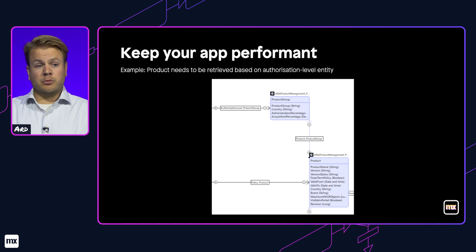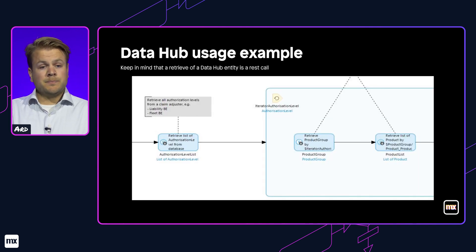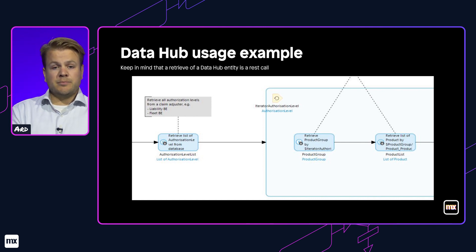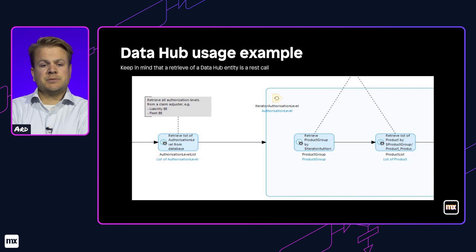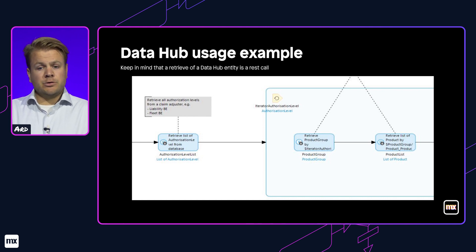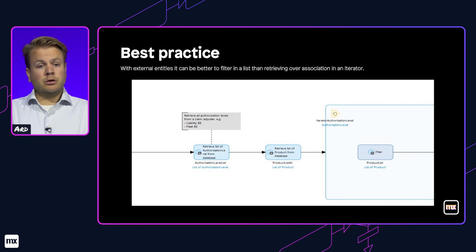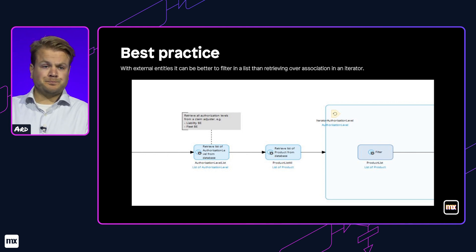The other challenge is how to keep your app performant when using Data Hub. In this example, we need to retrieve a product based on an authorization level entity, which is a local entity. When working with local entities only, you would retrieve a list of authorization levels from the database, iterate over that list, and retrieve the product group and product list via associations. But when using Data Hub, every retrieve over association is a REST call. So a best practice is to retrieve the list of authorization levels from your local database, retrieve the list of products via Data Hub, and then filter the product list on authorization level. If your product list is not enormous, this is far more performant.